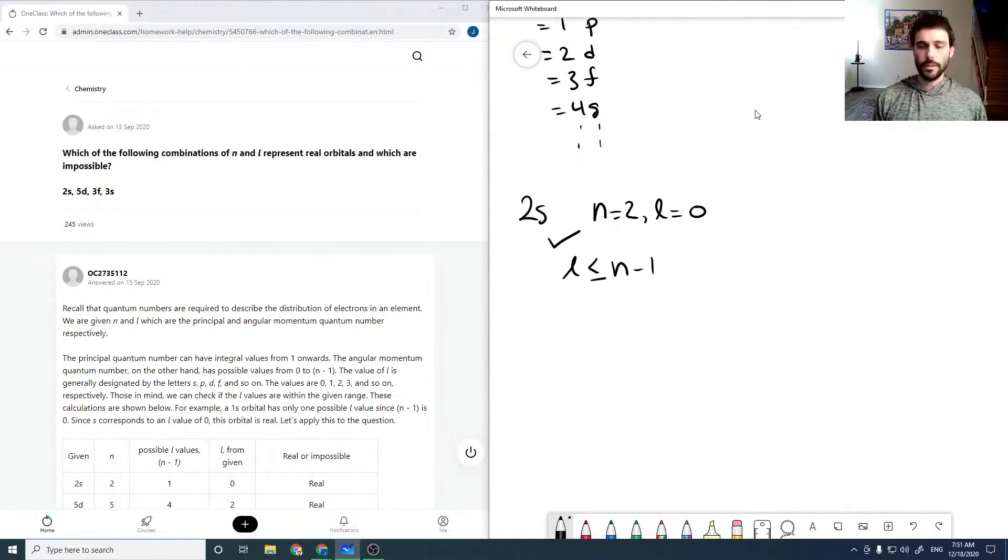So 5d, n equals 5, l equals 2. So that looks good, l is less than or equal to n minus 1.